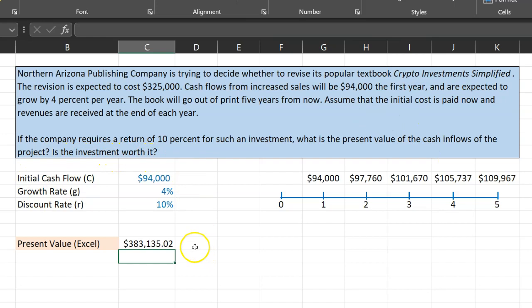And if the question also asks you, is it a worthwhile investment? Well, you're going to have to spend $325,000 to get a present value of cash flows that is $383,000. Would you spend $325,000 to get $383,000? Yes. We also refer to this as a project that has a positive NPV. So this is a worthwhile investment.